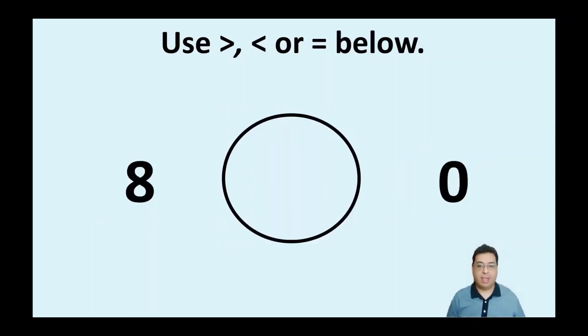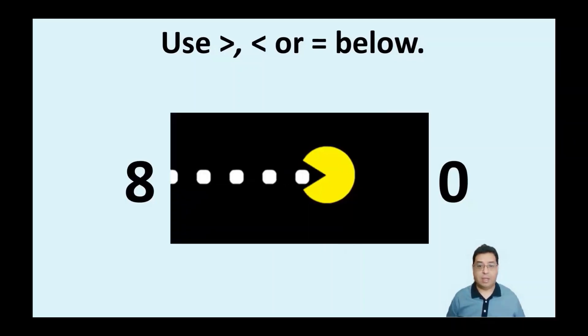So now we have eight and zero here. So which direction is the symbol going to go? Yes, it's going to go towards the eight because eight is bigger than zero. And we know that Pac-Man as well will want to eat the bigger amount, the greater amount, the one that has more. So he's going to go towards the eight.